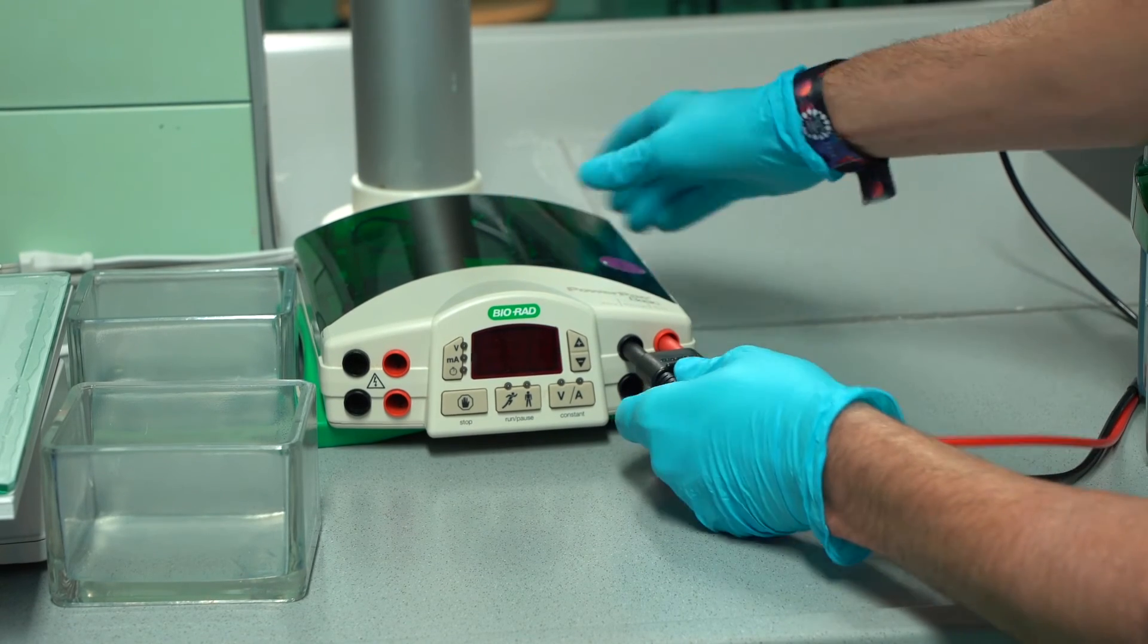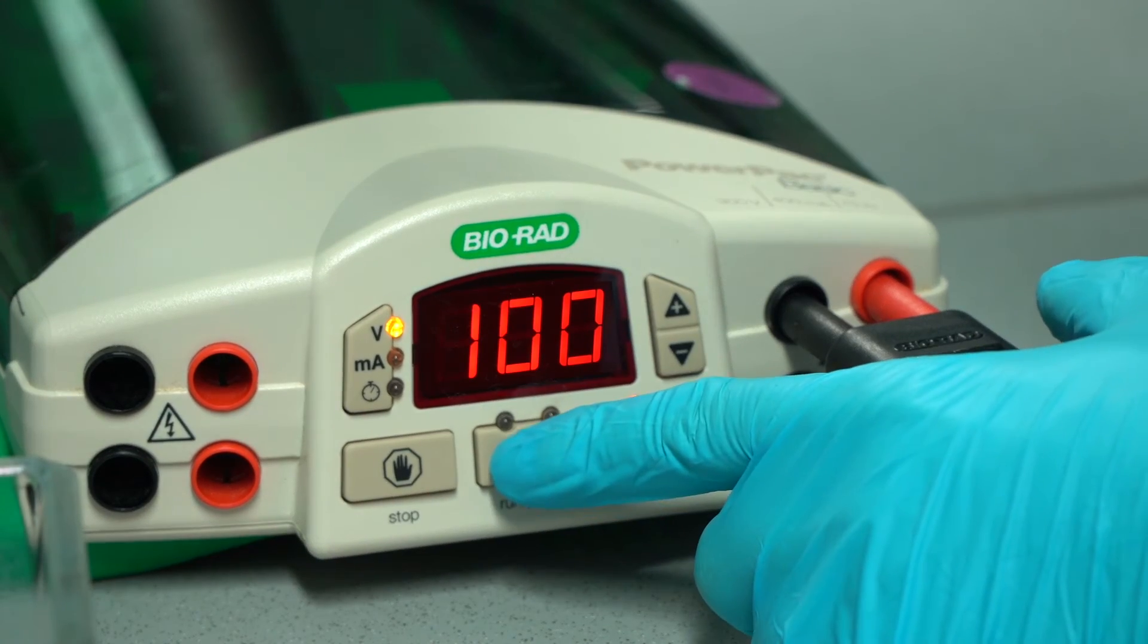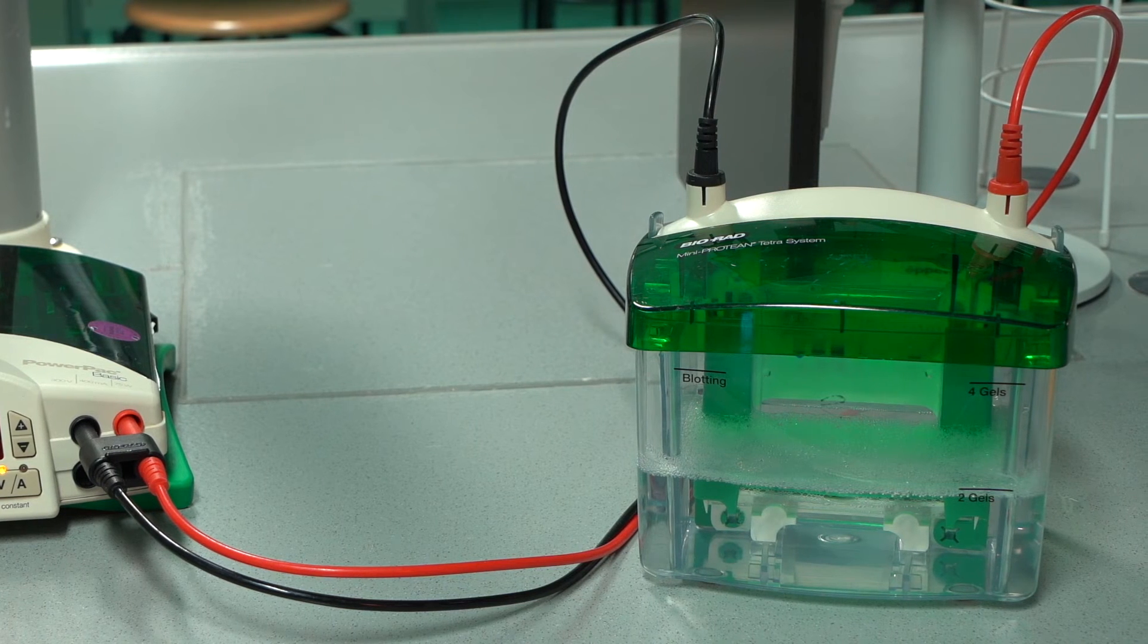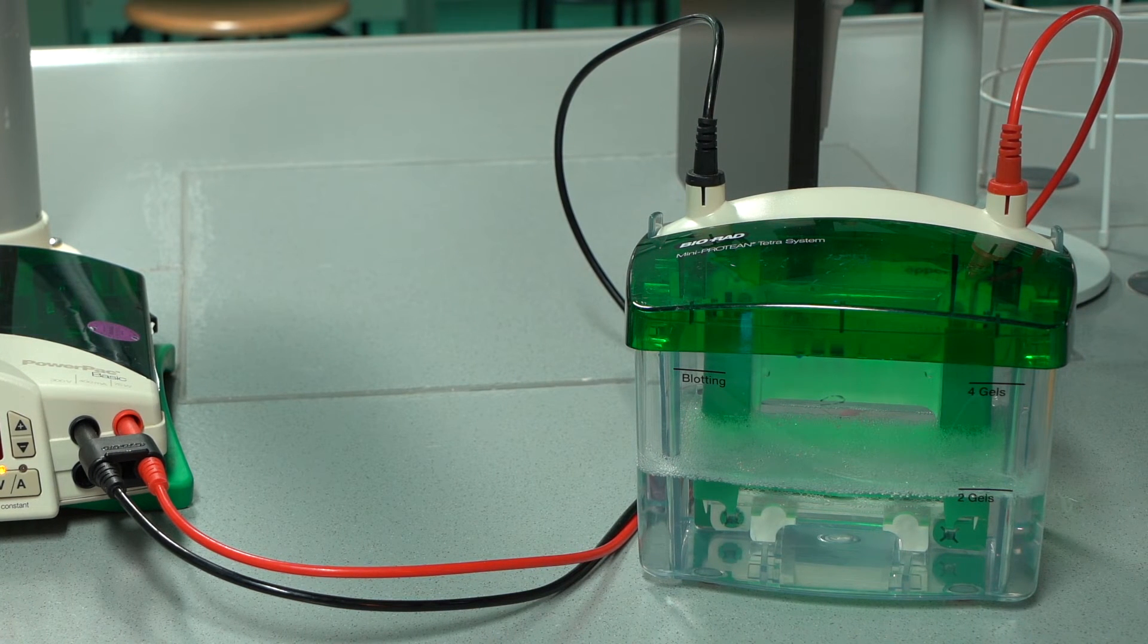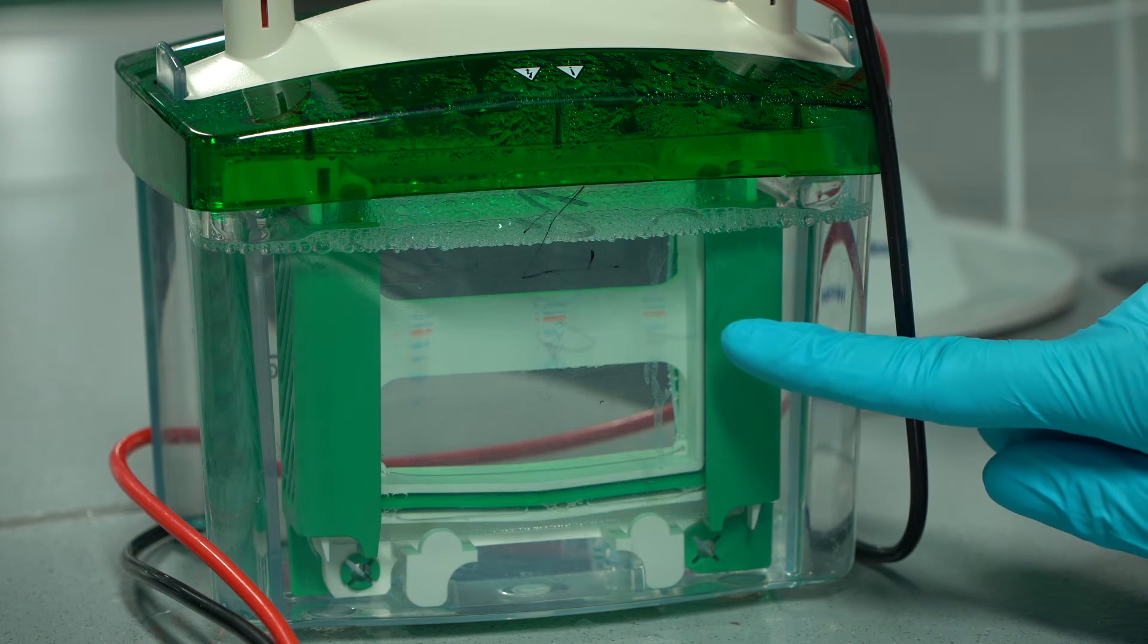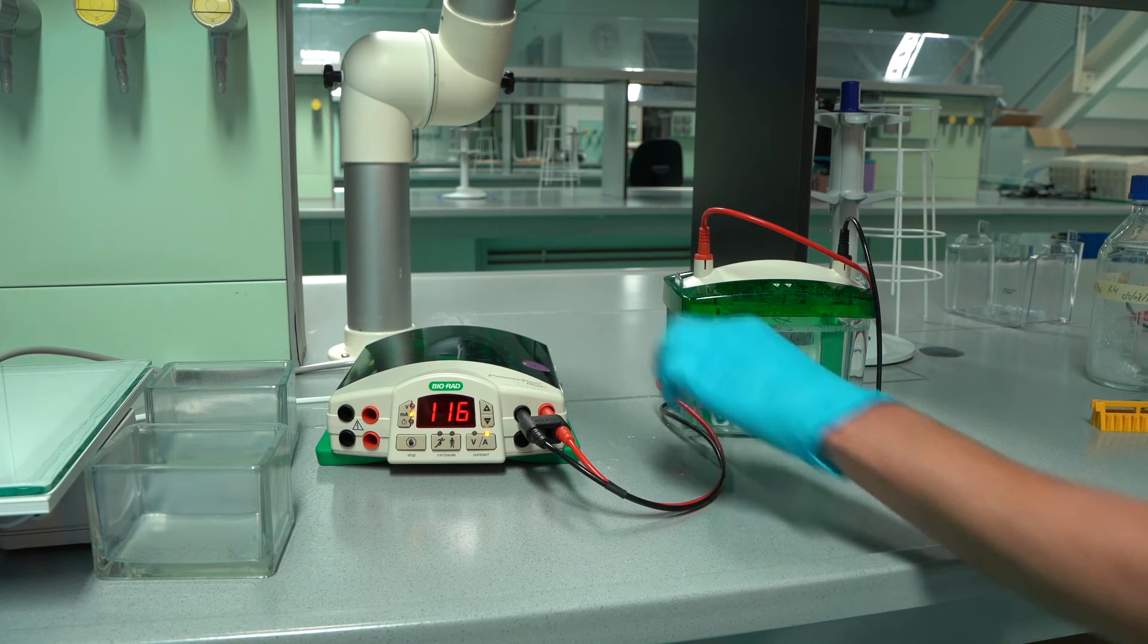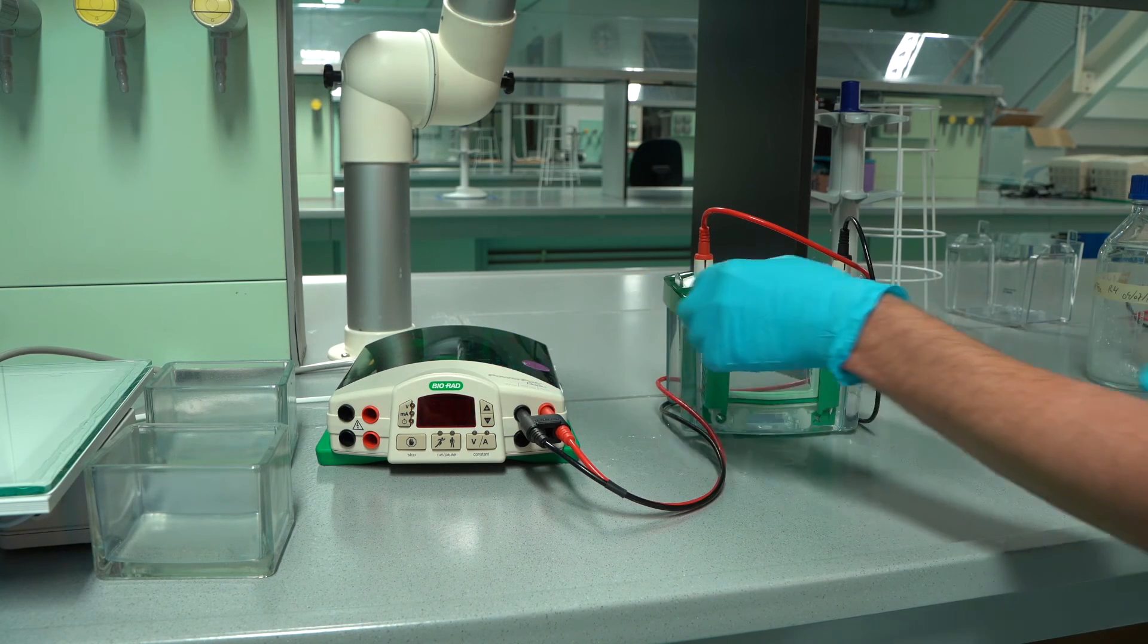Connect the power cords to the power supply. Run the gel on 100 volts until the samples are completely in the stacking gel. From then on, the gel can continue to run at 150 to 200 volts. Check the ladder to see if the separation has completed, or when the dye has reached a centimeter from the bottom of the gel. When it has, you can switch off the power supply.